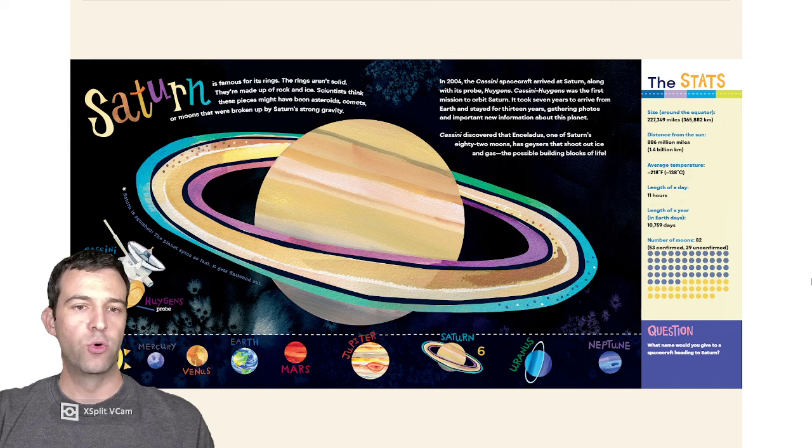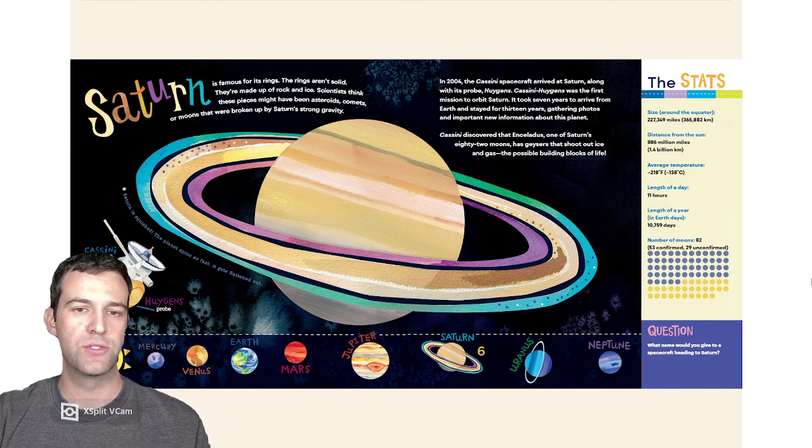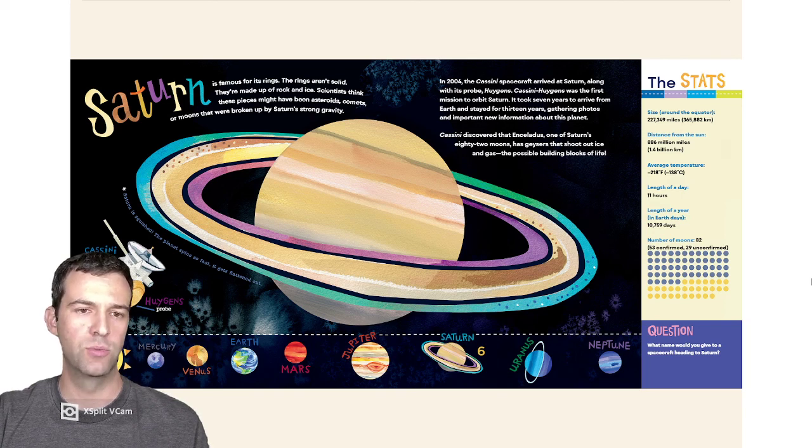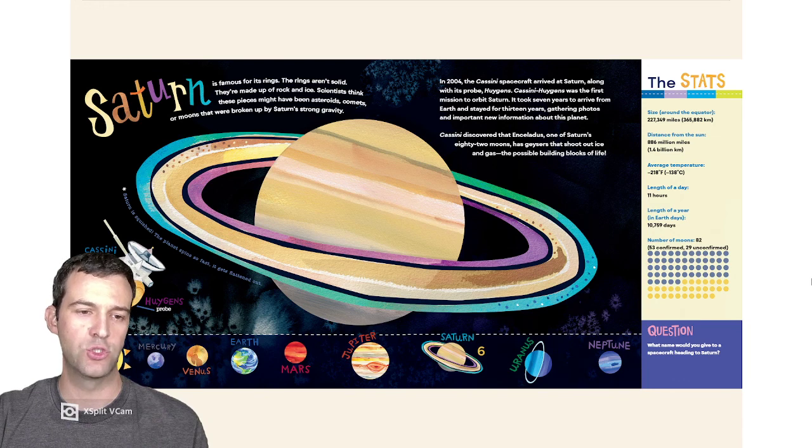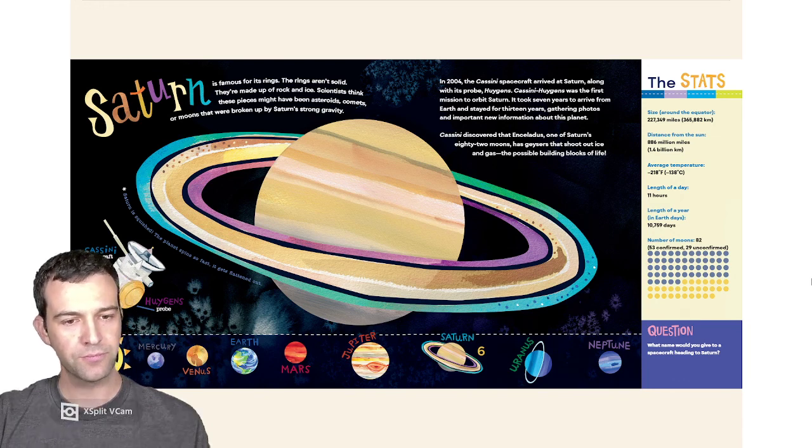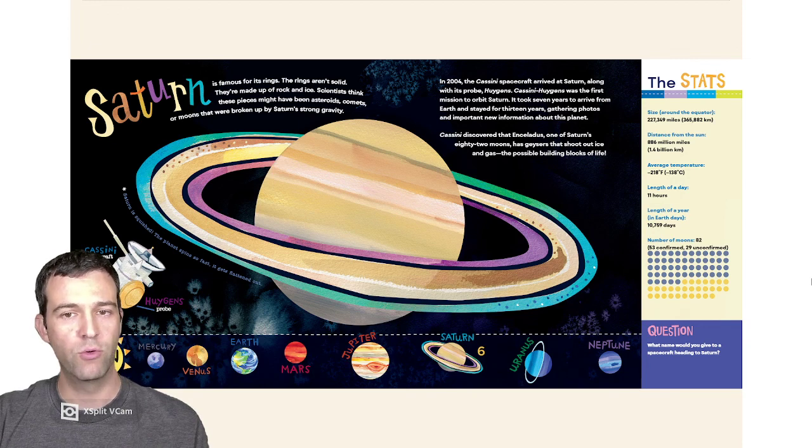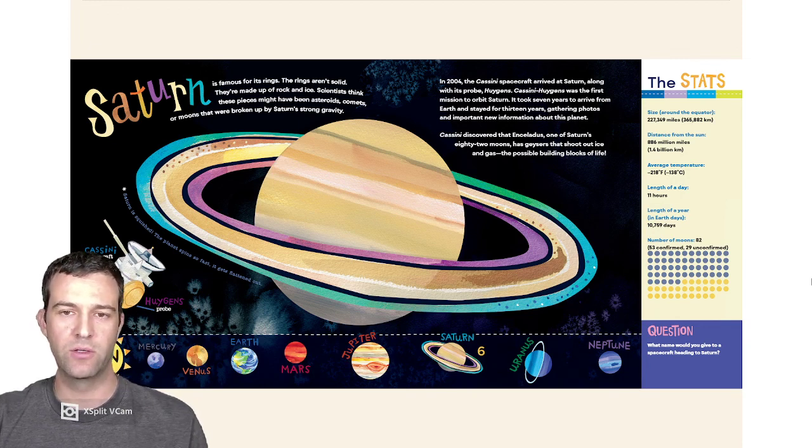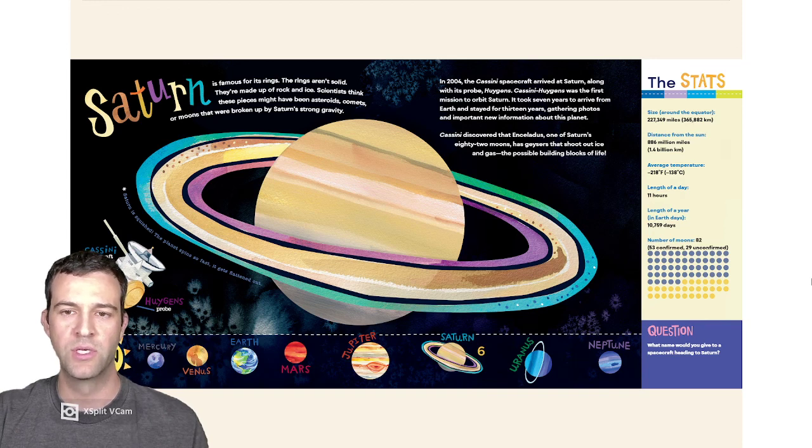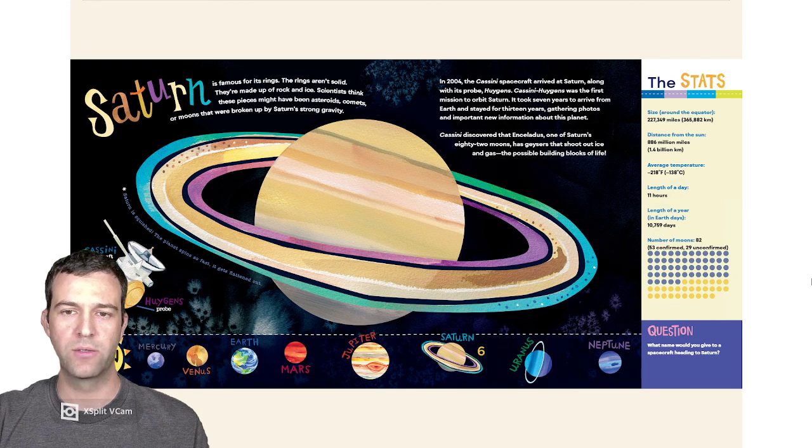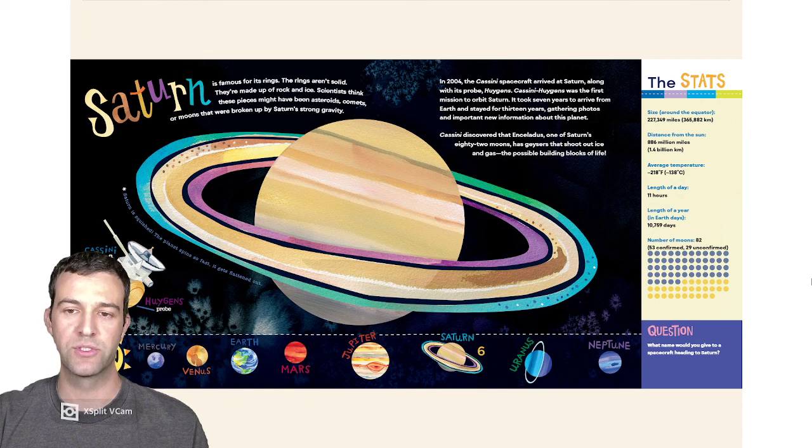Saturn is famous for its rings. The rings aren't solid. They're made up of rocks and ice. Scientists think that these pieces might have been asteroids, comets, or moons that were broken up by Saturn's strong gravity. In 2004, the Cassini spacecraft arrived at Saturn, along with its probe Huygens. Cassini Huygens was the first mission to orbit Saturn. It took seven years to arrive from Earth and stayed for 13 years, gathering photos and important new information about this planet.